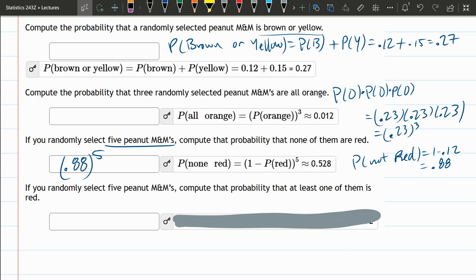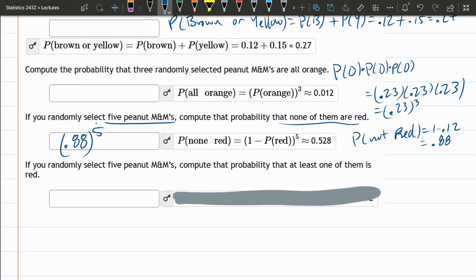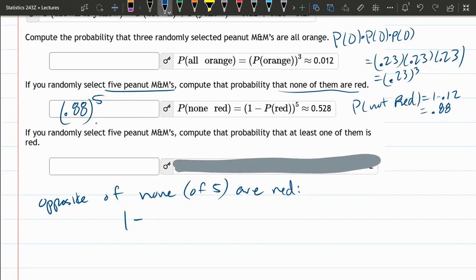And think about the one we just answered. Probability that we select five and none are red. So what's the opposite, the complement that none are red? That means one or more is red. So we can do the opposite of none are red. None of the five are red. So that'll be one minus, that's the opposite. And what we just computed in the last one. So it's one minus that number we just got. And that'll be this probability.